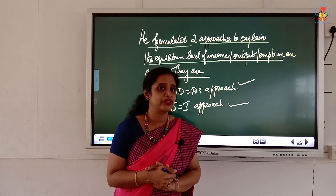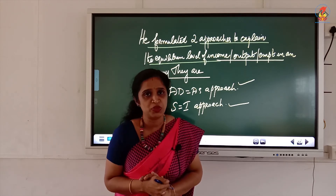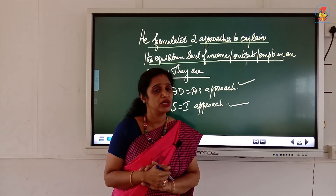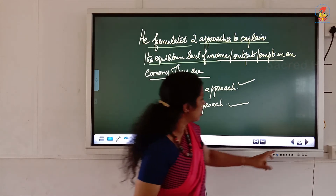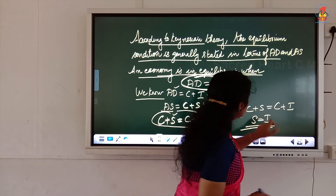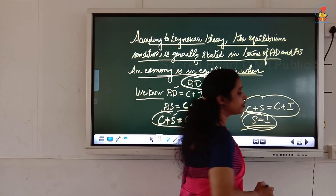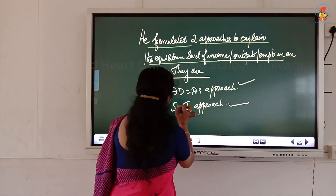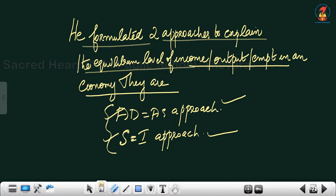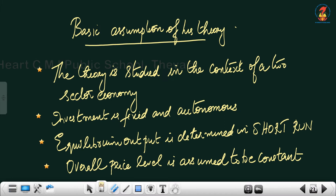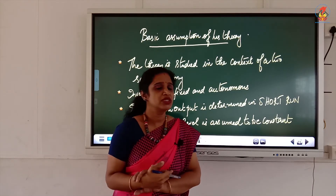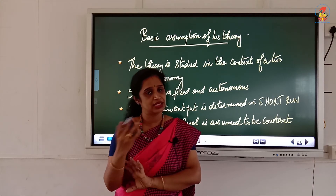For the Class 12 syllabus, you have to learn both Keynesian approaches which determine the equilibrium level of income, output, or employment. The S equals I approach is derived from C plus S equals C plus I, giving S equals I. Both approaches — S equals I and AD equals AS — will be covered.